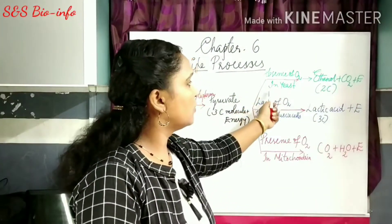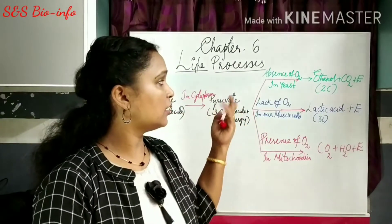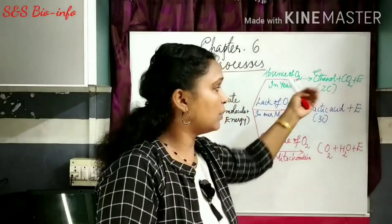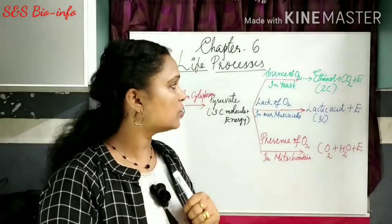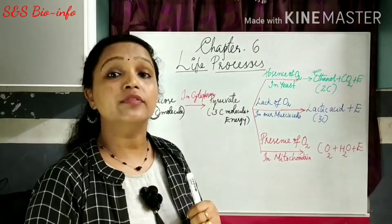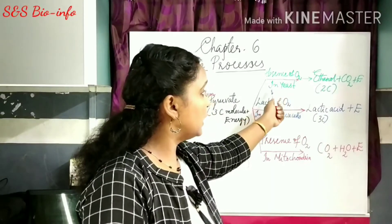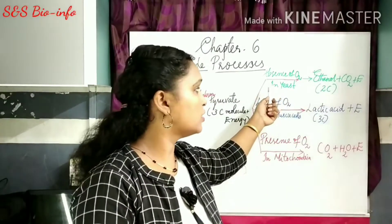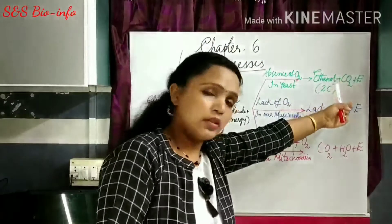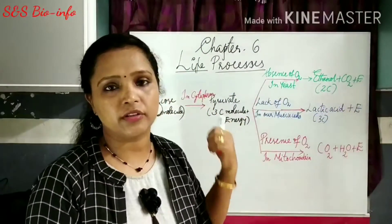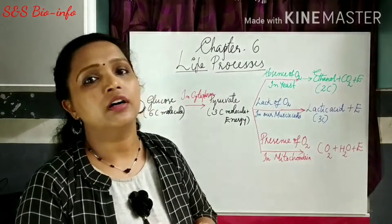Now let us learn how the pyruvate, the three-carbon molecule, is converted into different compounds in different organisms. First, in the absence of oxygen in yeast, you are familiar with fermentation. In fermentation, the production of ethanol and carbon dioxide takes place in the presence of glucose. This is an anaerobic pathway of glucose breakdown. In the yeast cell, it does not require oxygen, and a small amount of energy is produced for their survival and for producing new yeast buds.